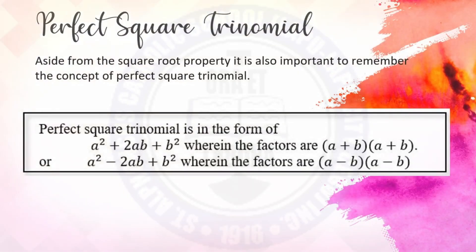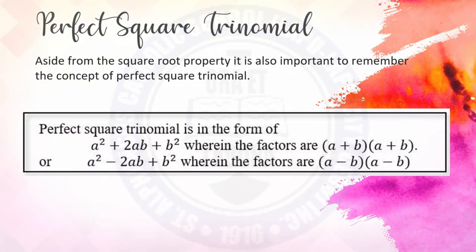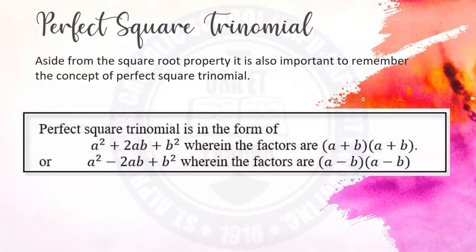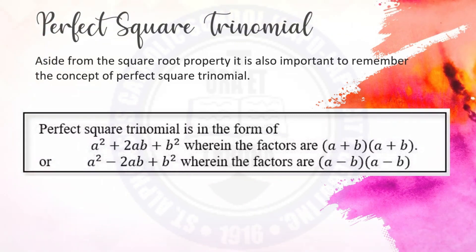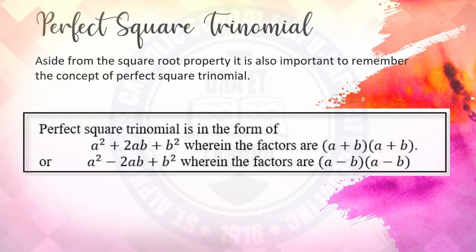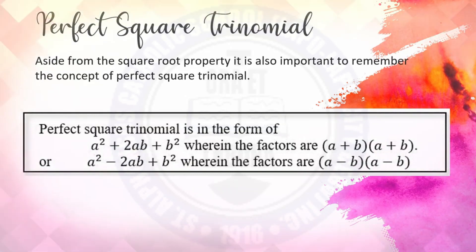Aside from the square root property, it is also important to remember the concept of perfect square trinomial. A perfect square trinomial is in the form of a squared plus 2ab plus b squared, wherein the factors are quantity a plus b times quantity a plus b. Or, a squared minus 2ab plus b squared, wherein the factors are quantity a minus b times quantity a minus b. Remember that the factor of the perfect square trinomial is the square of a binomial.